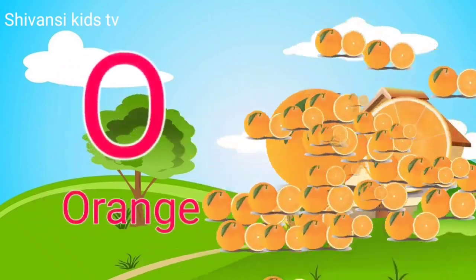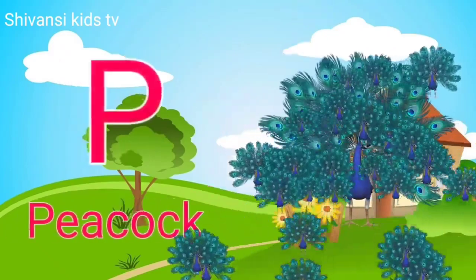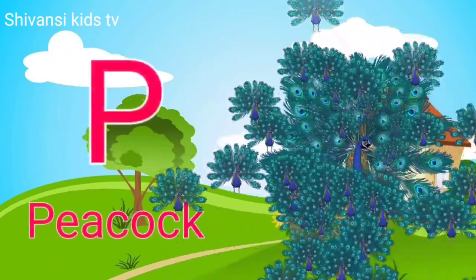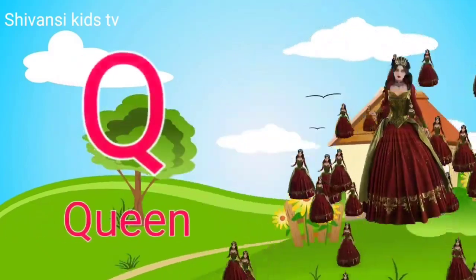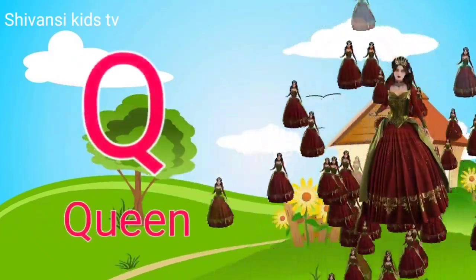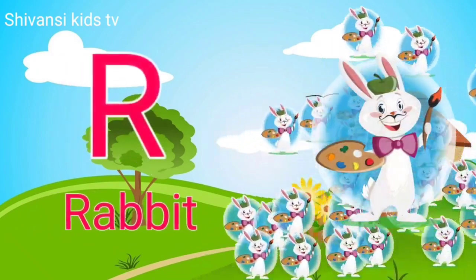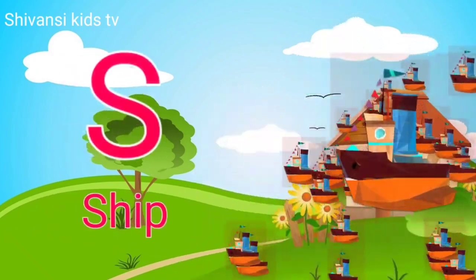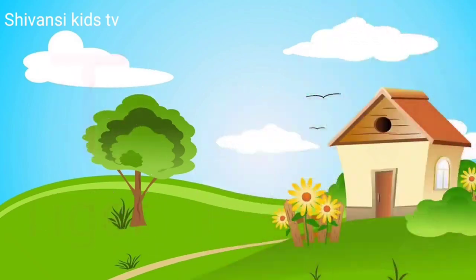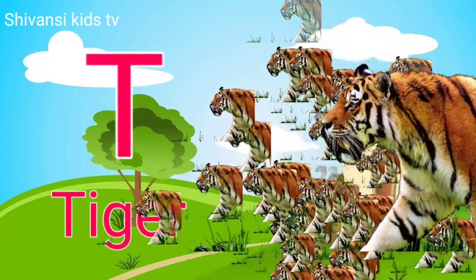O for orange, P for peacock, Q for queen, R for rabbit, S for sheep, T for tiger.